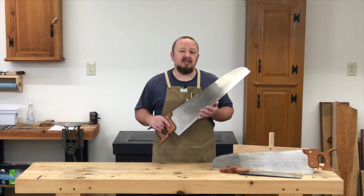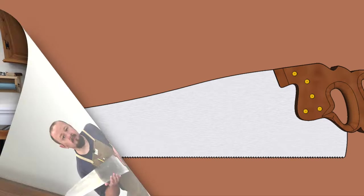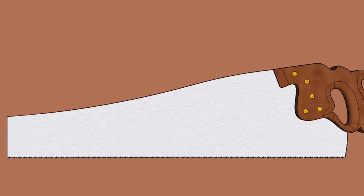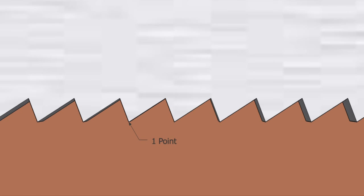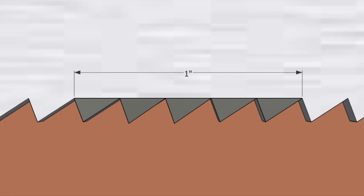There are two different ways that we can measure this in a handsaw: points per inch and teeth per inch. Here's an example of a common handsaw. We can measure tooth spacing by counting the number of teeth in an inch or by counting the number of points in an inch. A point is defined as the tip of the tooth, and a tooth is measured from the bottom of one gullet to the bottom of the next. To measure the spacing in teeth per inch, or TPI, we measure from gullet to gullet and count the number of whole teeth in the inch. In this example, there are five teeth per inch.